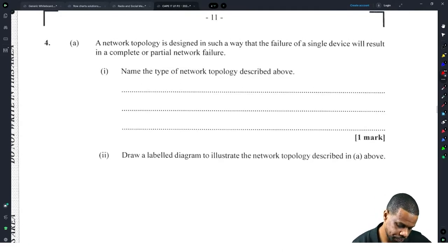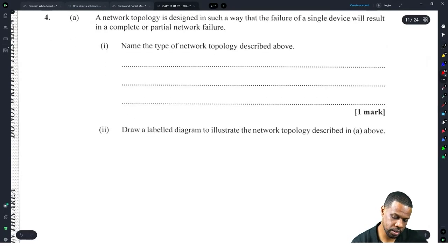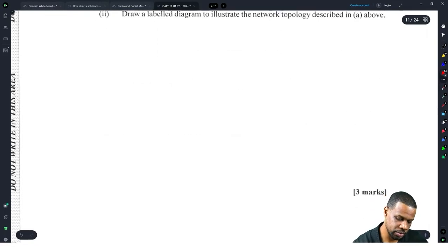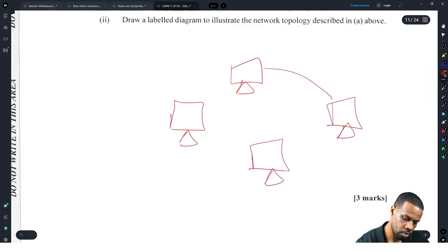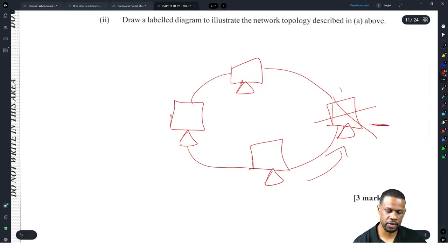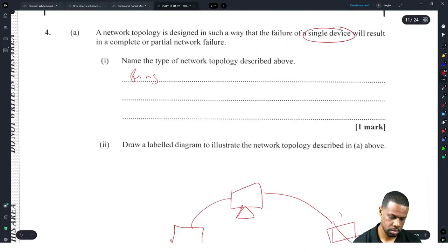A network topology is designed in such a way that the failure of a single device will result in a complete or partial failure. Name that topology. Ring, because the failure of a single device, clearly if one device goes down that's it. What will happen with a ring is if this one device goes down, that means the data that are trying to travel here will not be able to pass, so it will have a failure because somewhere along the ring the data can't get around the other side.